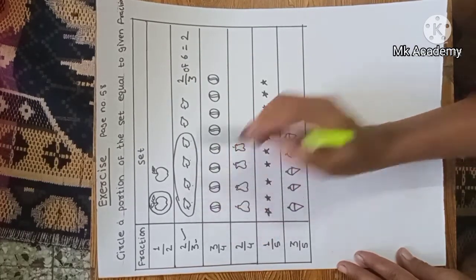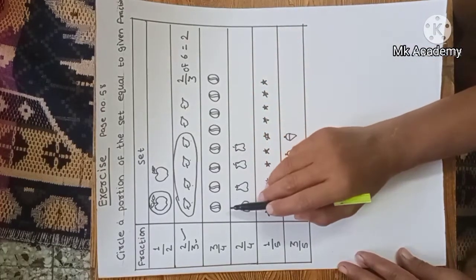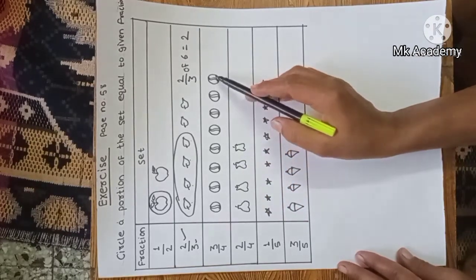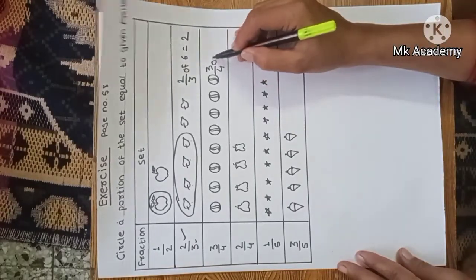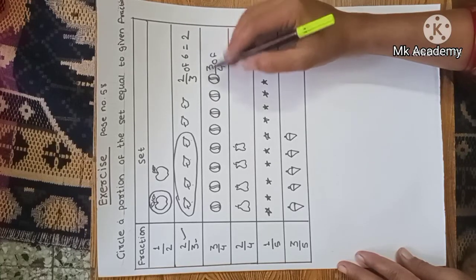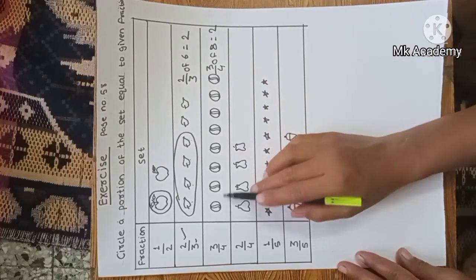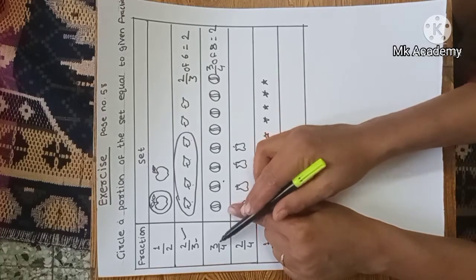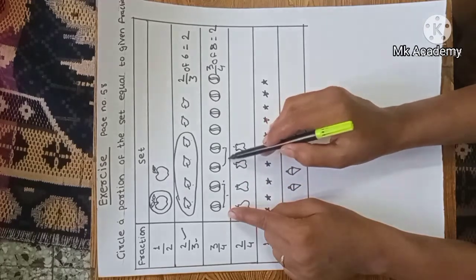Three upon four: first we count the balls — one, two, three, four, five, six, seven, eight — eight balls. Three-fourths of eight means there are two balls in one set. We have to circle three sets.